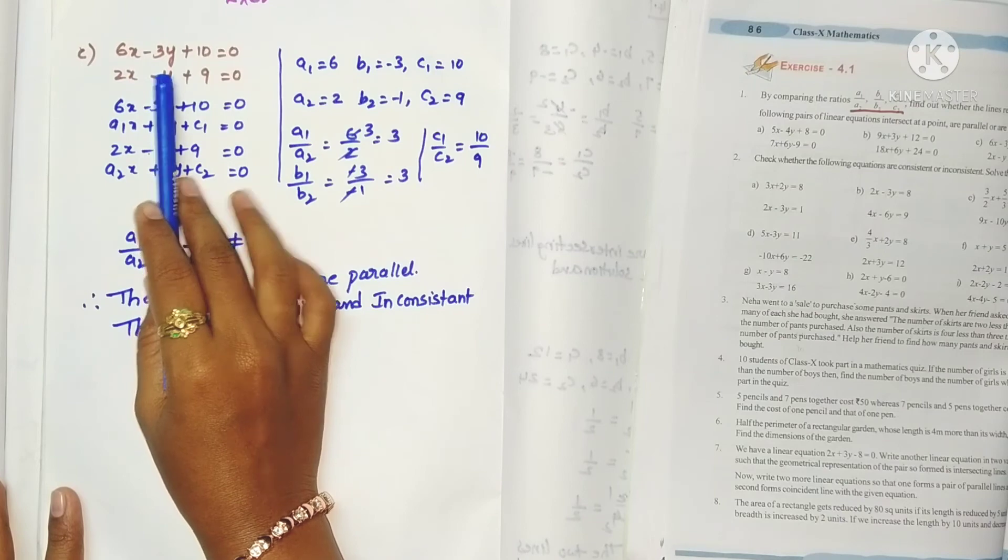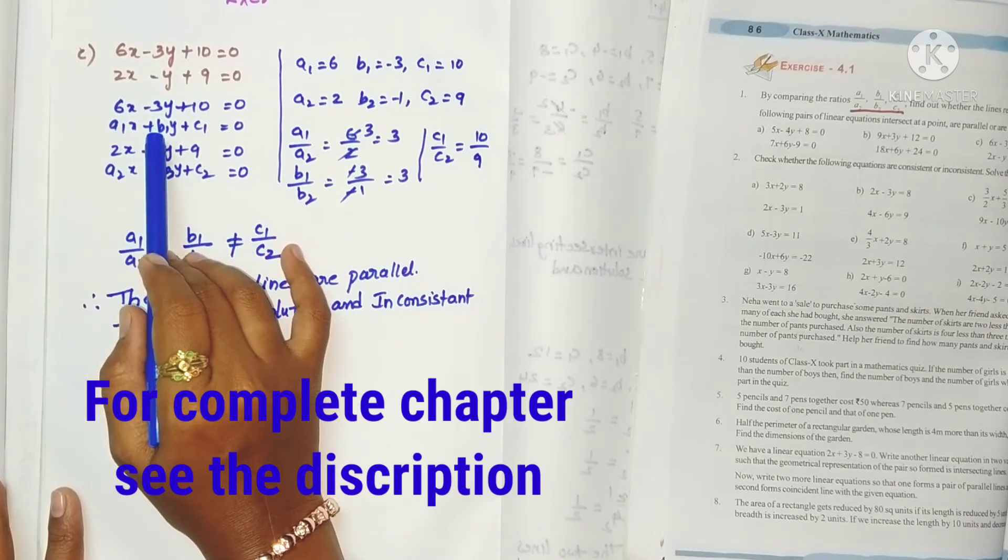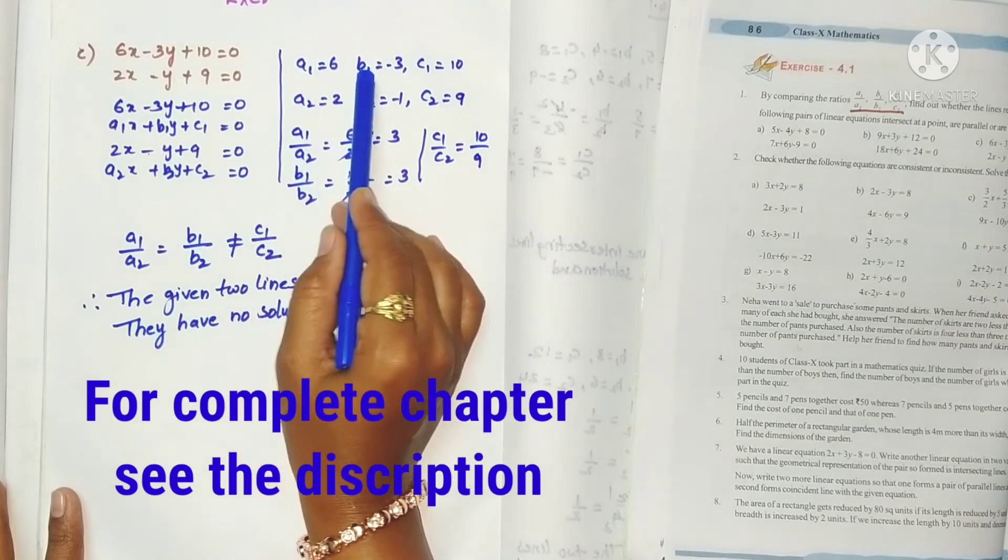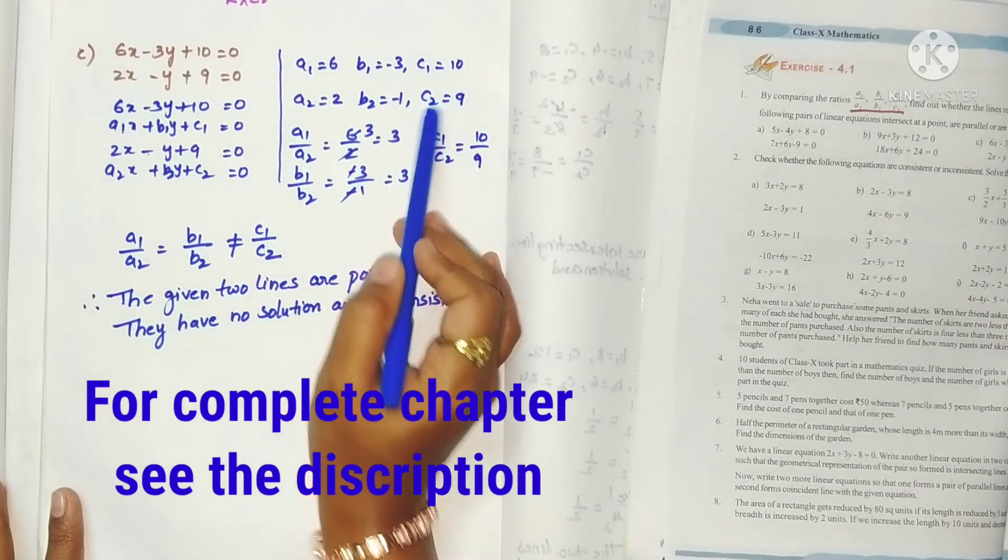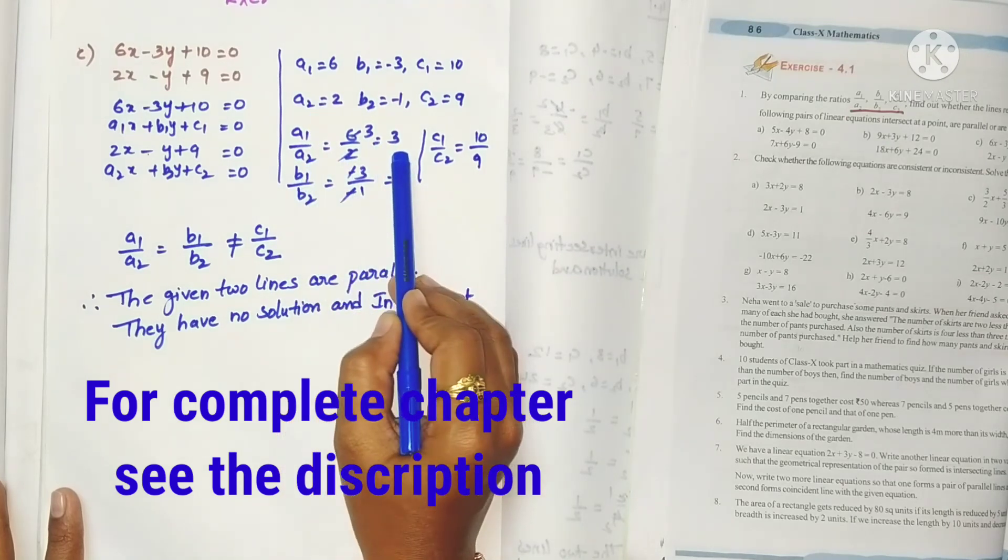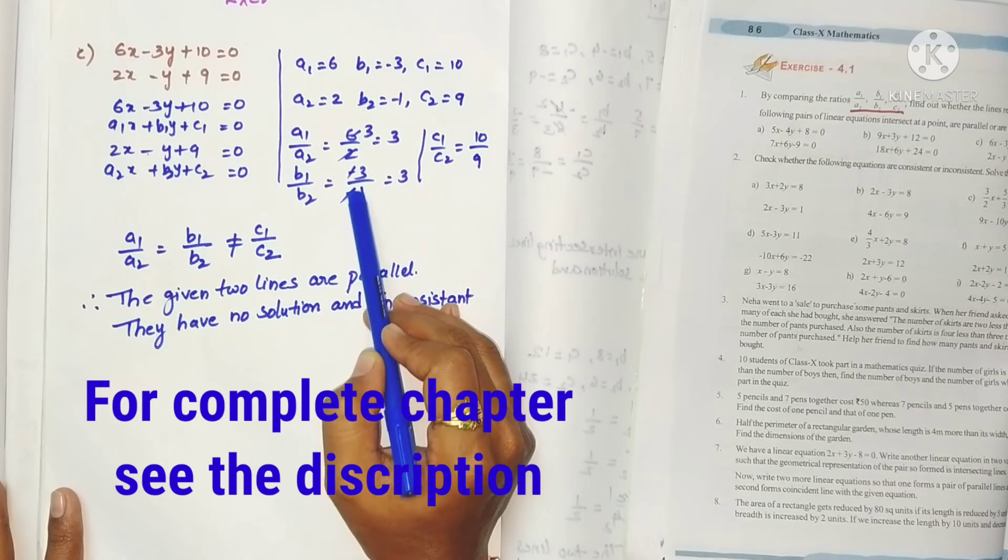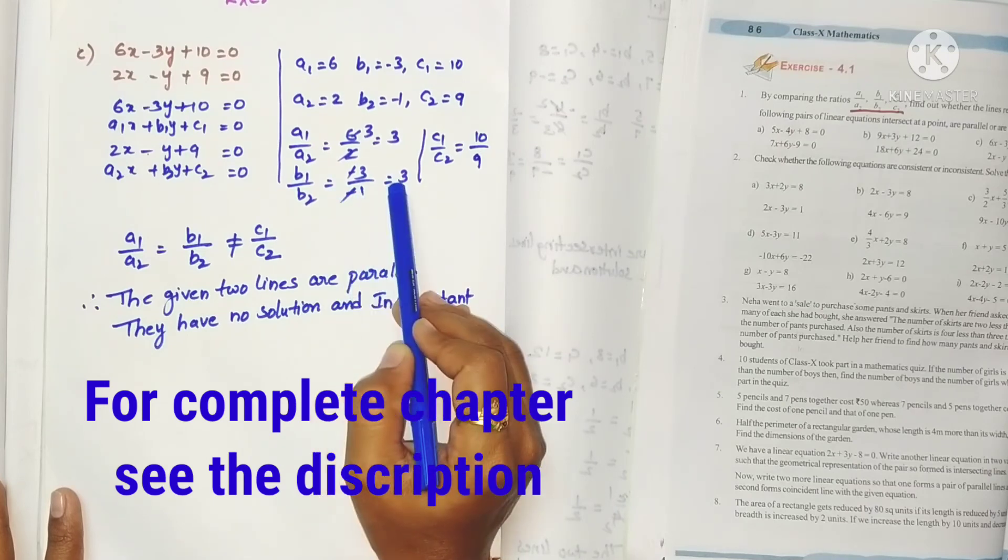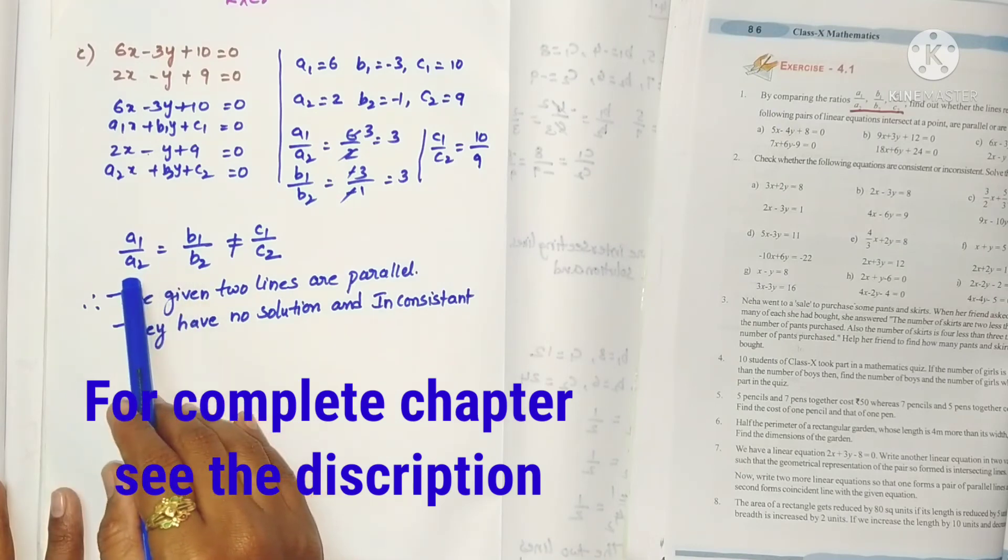Third problem: 6x minus 3y plus 10 equals 0. So after comparing with a1x, b1y plus c1, we get a1, b1, c1. Similarly second equation also gives a2, b2, c2. a1 by a2 is 3, b1 by b2 is also 3 (minus 3 by minus 1, minus minus will get cancelled, gives 3).